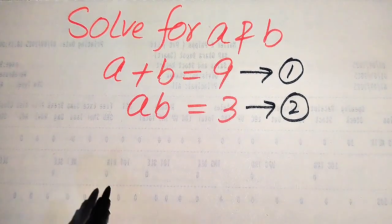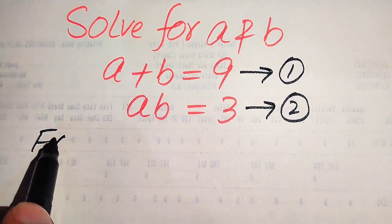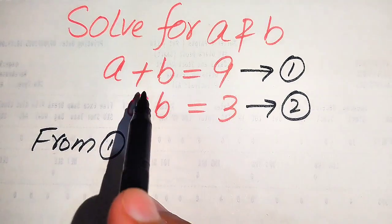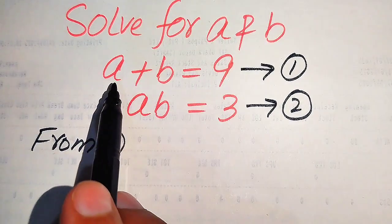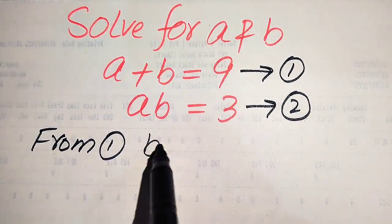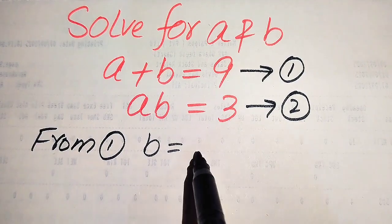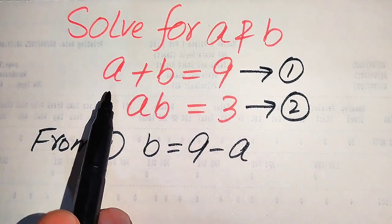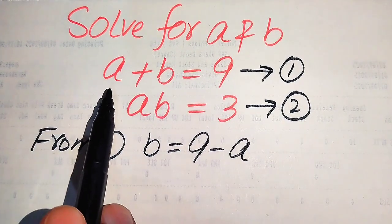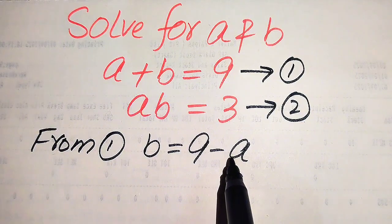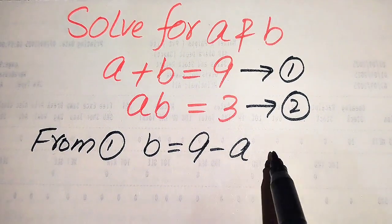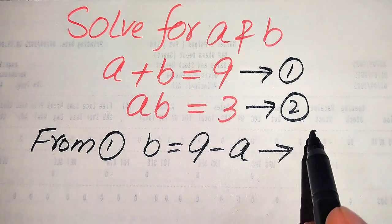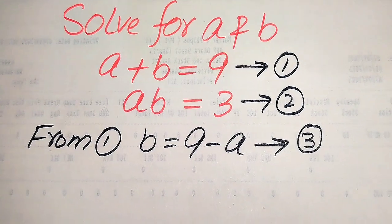We focus on equation number 1. From equation number 1, we move a to the right-hand side and we get b equals to 9 minus a. This positive a becomes negative a when moved to the right-hand side, and we call this equation number 3.